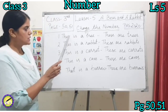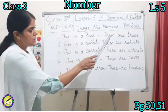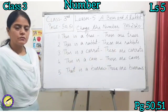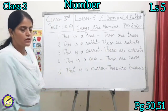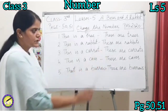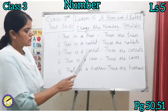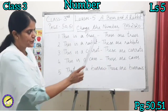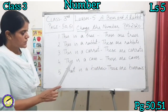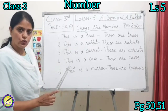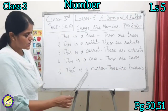The first sentence is: this is a tree. Second: this is a rabbit — these are the rabbits. Third: this is a carrot — these are the carrots. Fourth: this is a cave — these are caves. Fifth: that is a burrow.